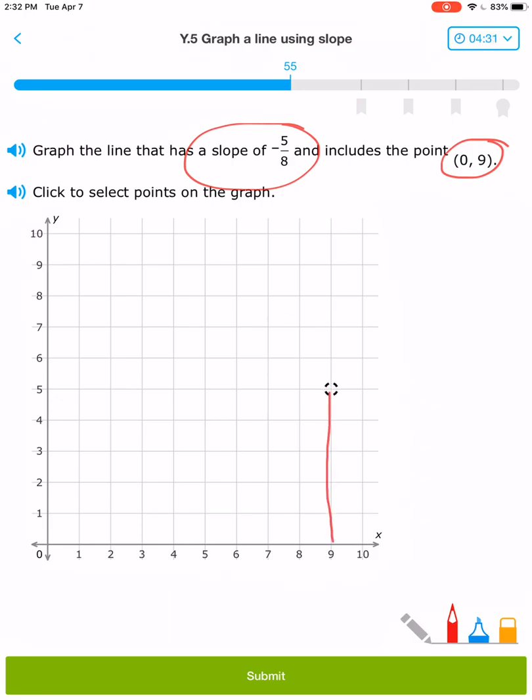So the opposite of down 5 and over 8 is going to be up 5: 1, 2, 3, 4, 5, and left 8: 1, 2, 3, 4, 5, 6, 7, 8.